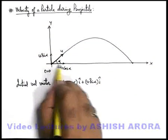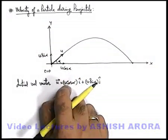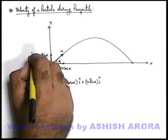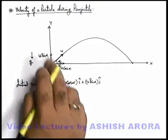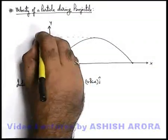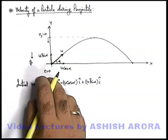Now, its x direction velocity remains constant, so this i cap component or the x component remains constant always. The y component is retarded by the acceleration g, so it first decreases, then at the topmost point v y becomes zero, and then it comes down and starts increasing again.